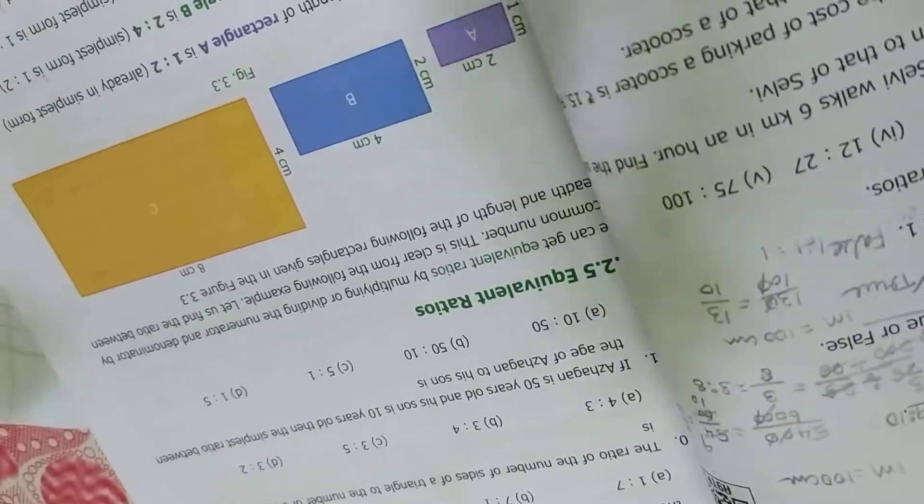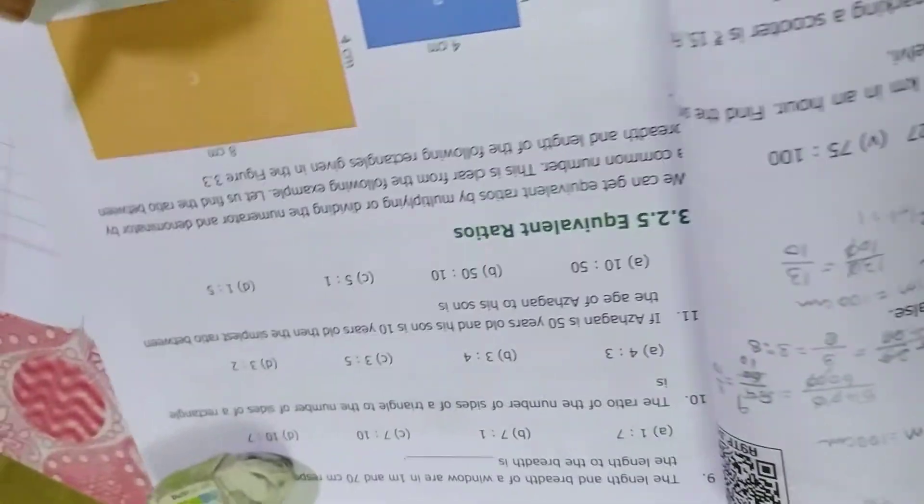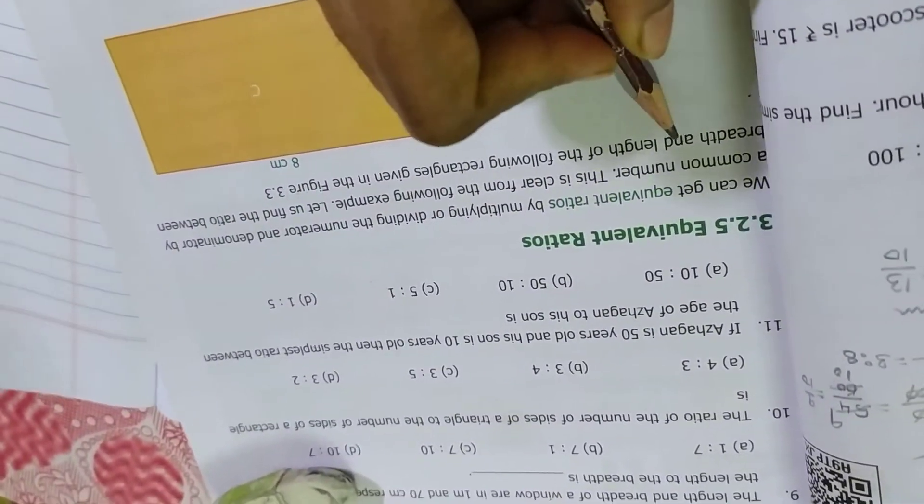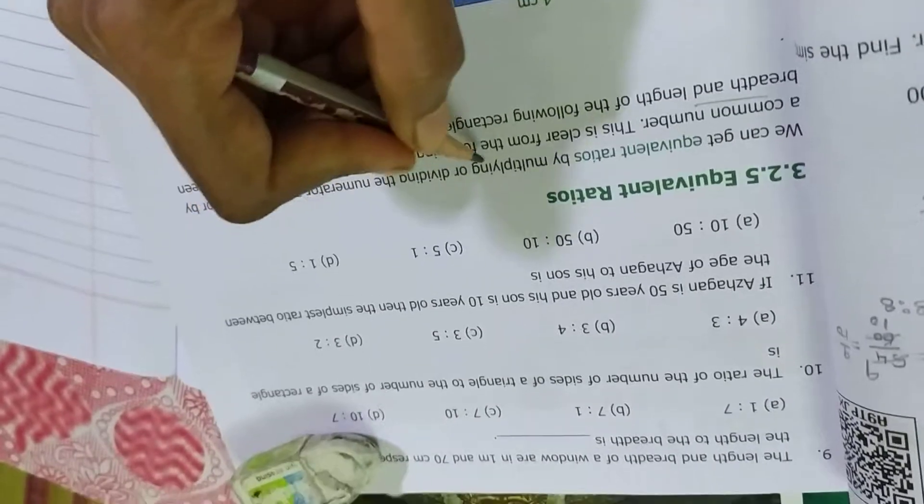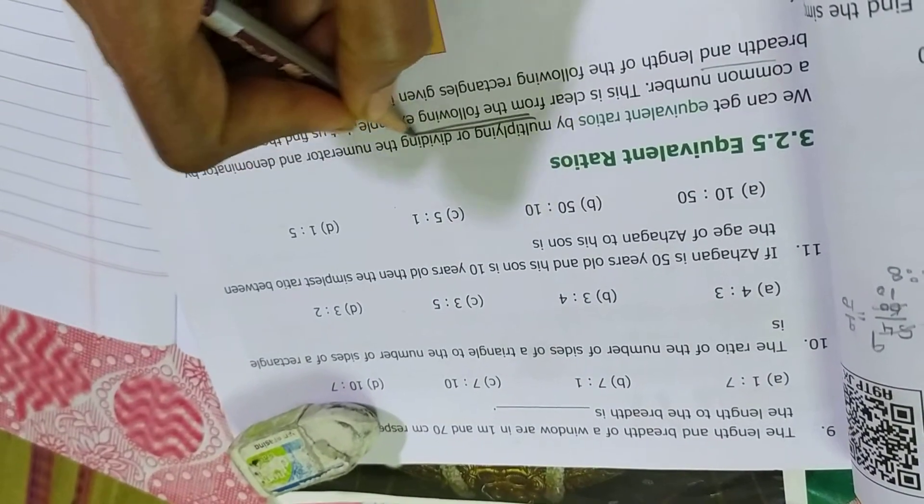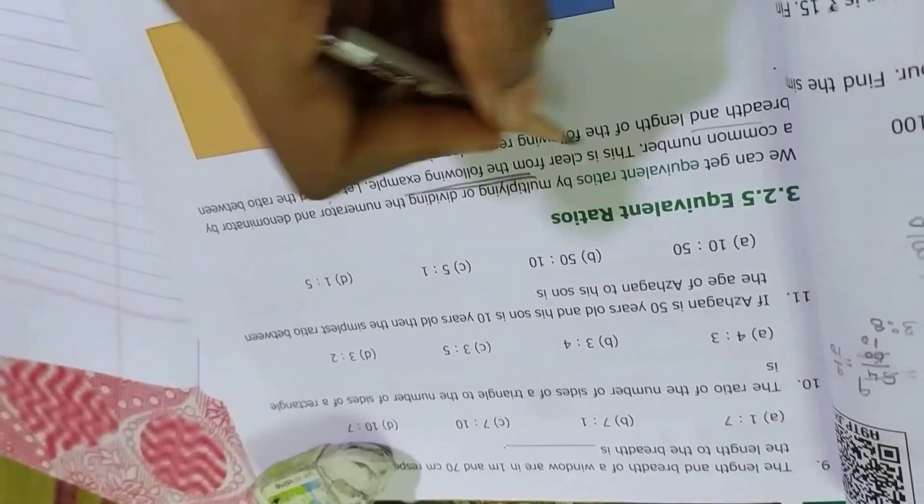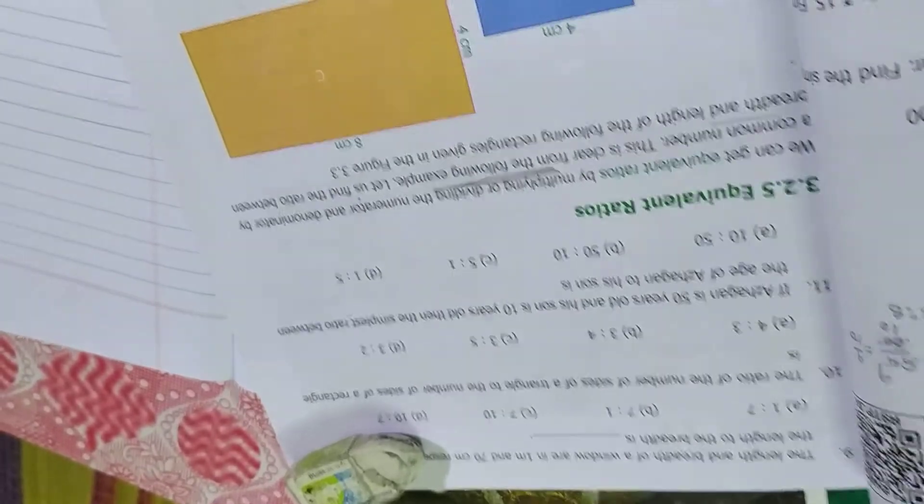Equivalent ratio. Equivalent ratio is nothing but multiplying or dividing the numerator and denominator by a common number. Multiplying or dividing numerator and denominator by a common number.